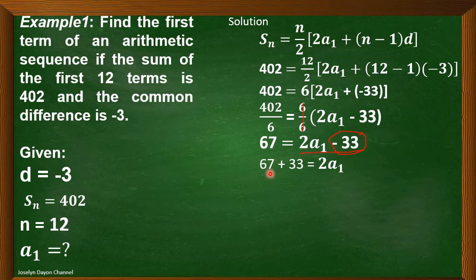Now, we will add 67 plus 33, that is equal to 100, bring down 2a sub 1. So, to solve for a sub 1, we have to divide both sides of the equation by 2.